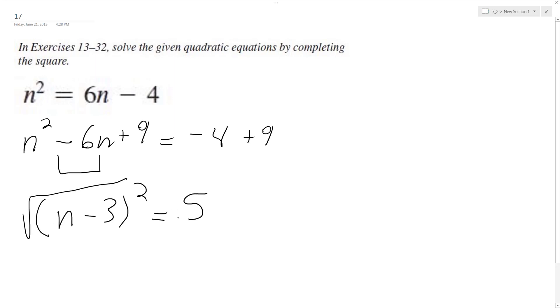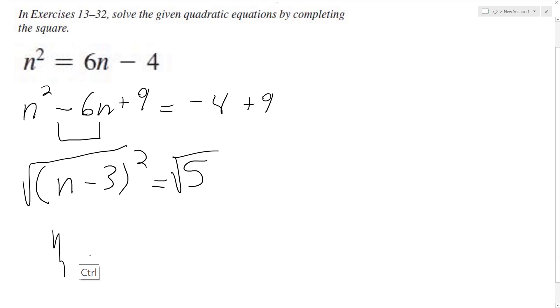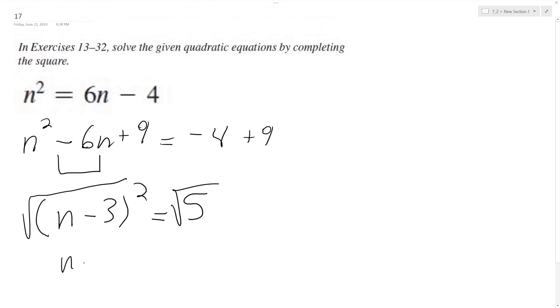Take square root of both sides. What we end up with is n minus 3 is equal to... I made a mistake. It's just plus or minus square root of 5.